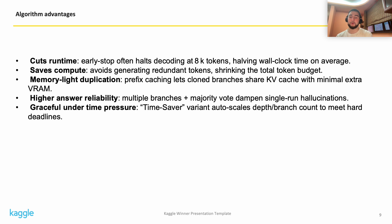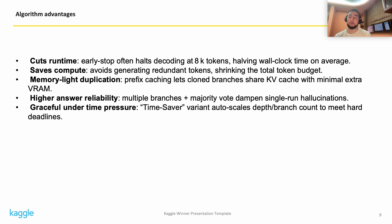From my point of view, this approach has the following key advantages. First, reduced runtime: early stopping often halts generation at 8k tokens, saving time and avoiding unnecessary token generation. Second, memory efficiency: cloned branches share cache data, so extra memory use was minimal. Third, answer reliability: having multiple branches and using majority voting helped reduce errors from single runs. Finally, it handled time limits well — the time-saver mode automatically scaled down if we were running out of time.